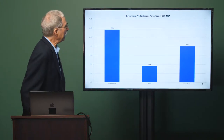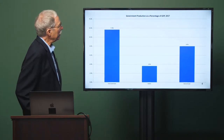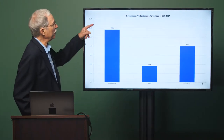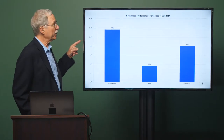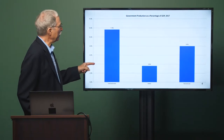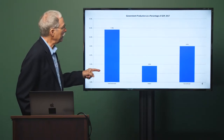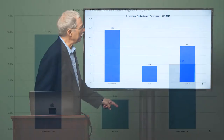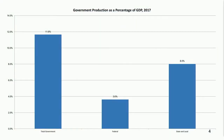Here are some numbers. This is government production as a percentage of GDP. It was only 11.6 percent in 2017 for total government, and most of it was state and local government — that's who does most of the production, particularly education and policing. Eight percent of GDP comes from state and local production and only 3.6 percent from federal government production.